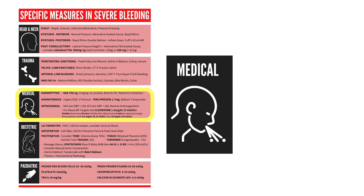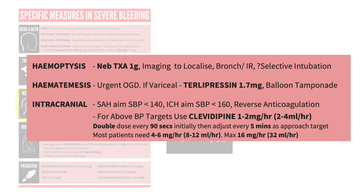Moving on to medical bleeding depending on region. For life-threatening hemoptysis, we would consider nebulized TXA and imaging to localize the site of hemorrhage. We may need to selectively intubate the non-bleeding lung and get the patient to bronchoscopy or interventional radiology to control the hemorrhage. Patients vomiting blood might need urgent endoscopy, and if we think this is variceal hemorrhage, we treat with terlipressin to reduce portal pressures and provide balloon tamponade with a Sengstaken-Blakemore tube.